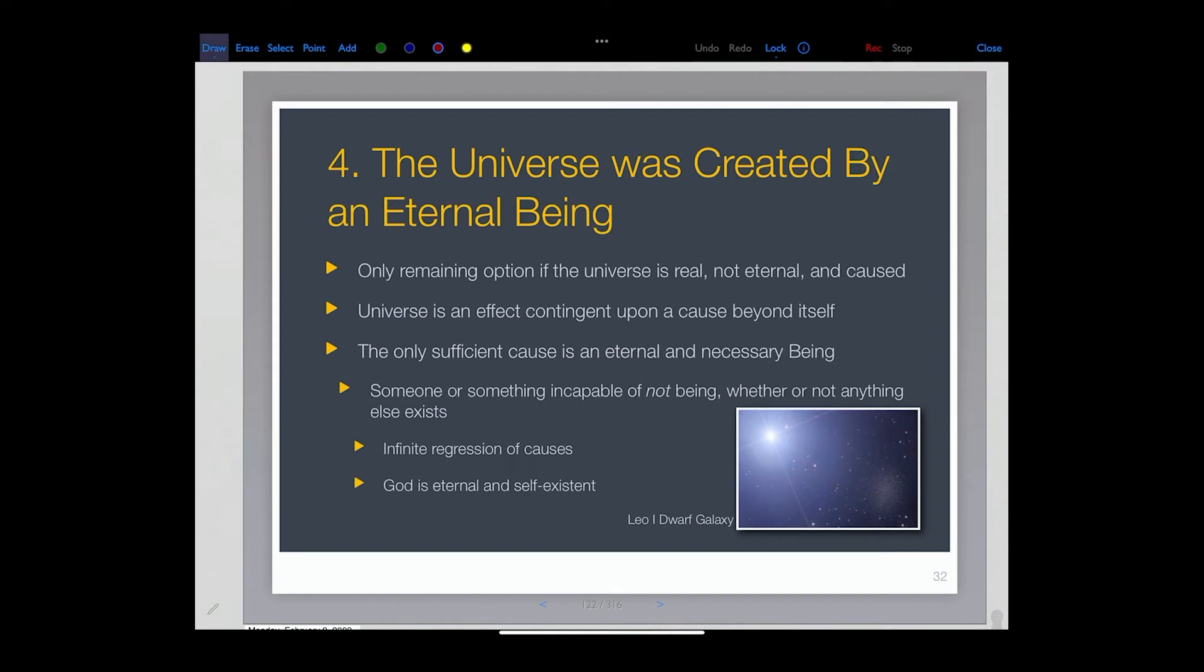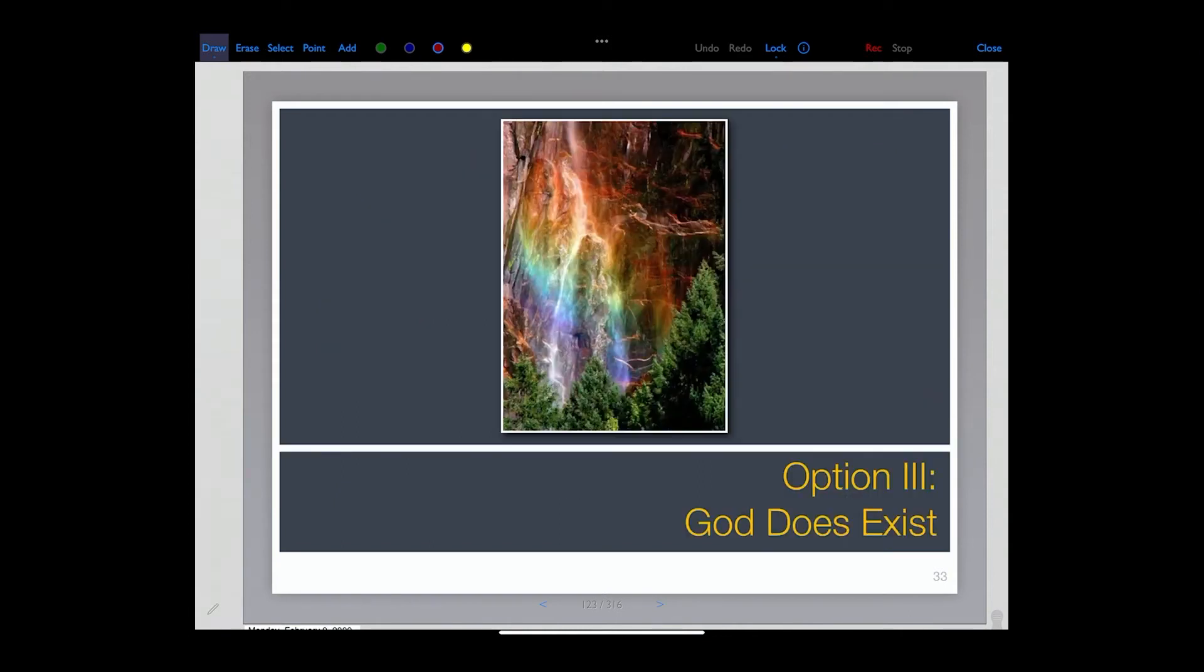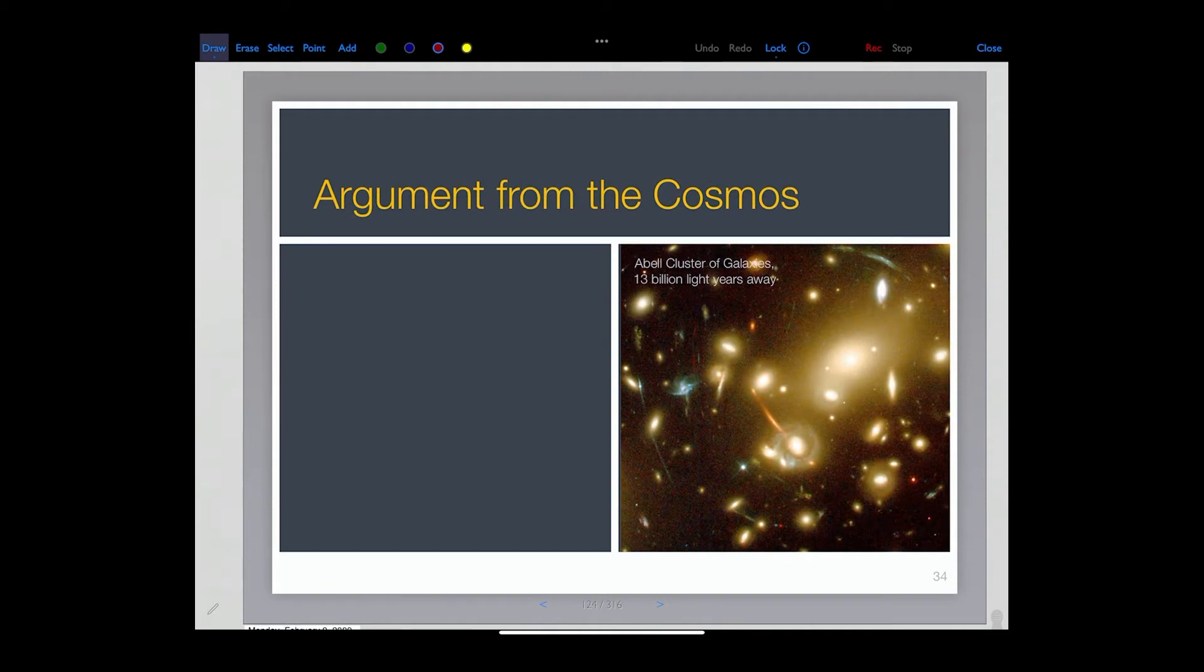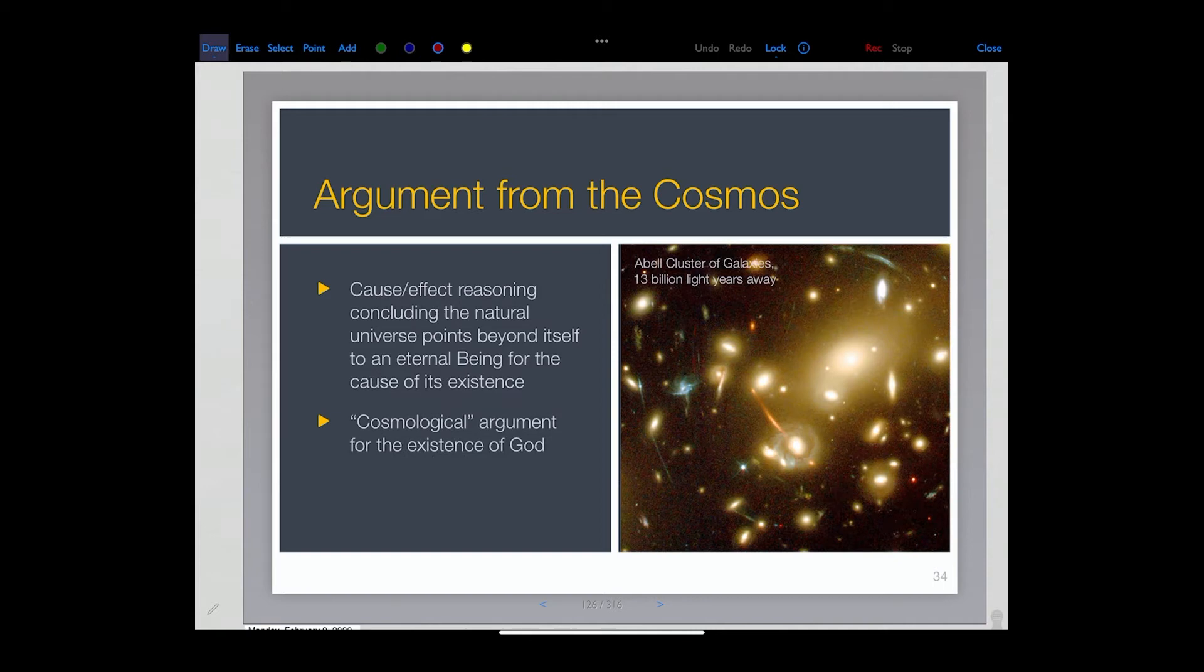Without him, you'd have an infinite regression of causes. He's got to be eternal. He has to be self-existent. And this is why I'm arguing then that there's good warrant that the universe was created by an eternal being. And so what you have here is the third conclusion that God does exist. And there are various arguments. So the argument from the cosmos, and so far we've used cause and effect reasoning to conclude that the natural universe points beyond itself.